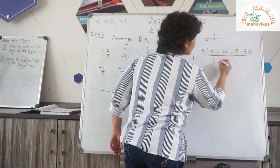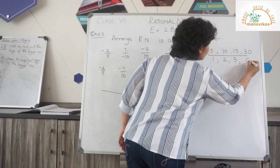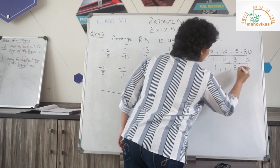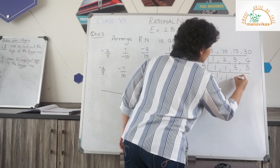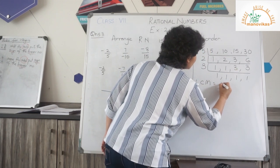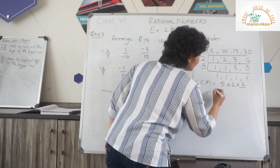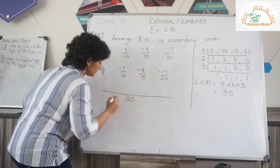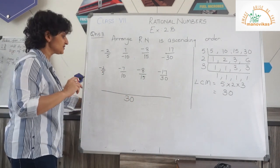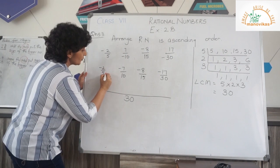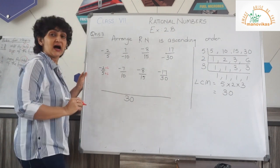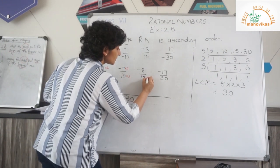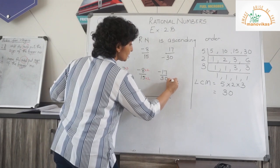To find the LCM, I take 5: 5×1=5, 5×2=10, 5×3=15, 5×6=30. So let me take the LCM. My LCM is 5×2×3, that is 5×2=10, 10×3=30. So let me take the LCM here as 30. Now, 5 goes 6 times in 30, 10 goes 3 times in 30, 15 goes 2 times, and 30 goes 1 time.